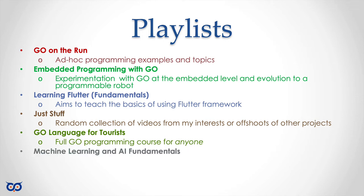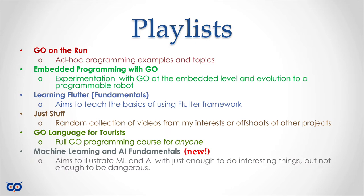Here's the new thing: I want to do Machine Learning and AI Fundamentals. This is going to be like Go for Taurus and Learning Flutter, where I just start off with the assumption that you are like me and we're just trying to teach ourselves enough machine learning. This is going to be something new, and the aim is to illustrate how we can do some things that are interesting — learn enough to do interesting things, but not enough to say that we're an expert.